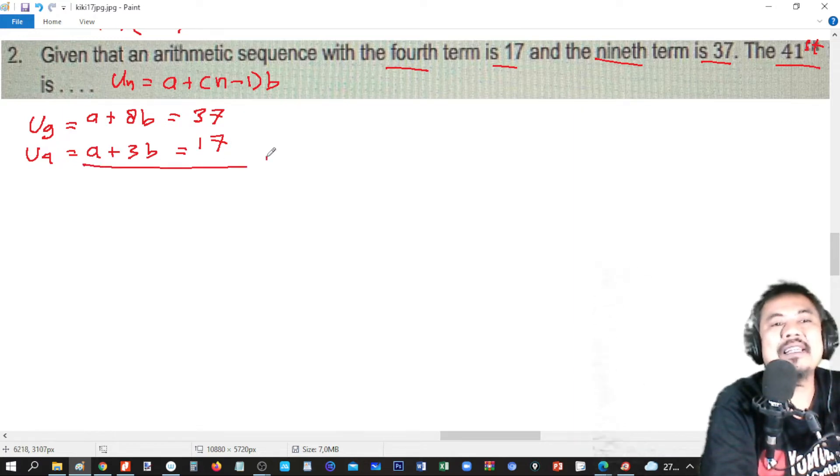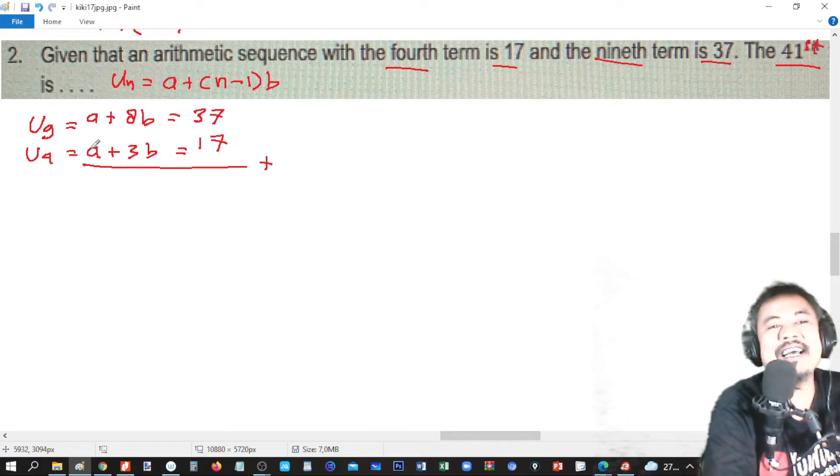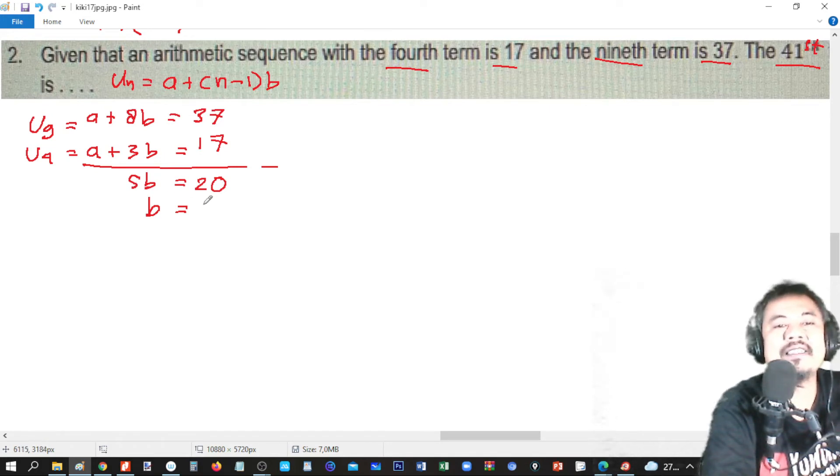We eliminate a because that's the easy one. By subtraction, we subtract them. Then, a minus a is 0. 8b minus 3b is 5b. Equal to 20. So, the value of b is 20 divided by 5. It is 4.